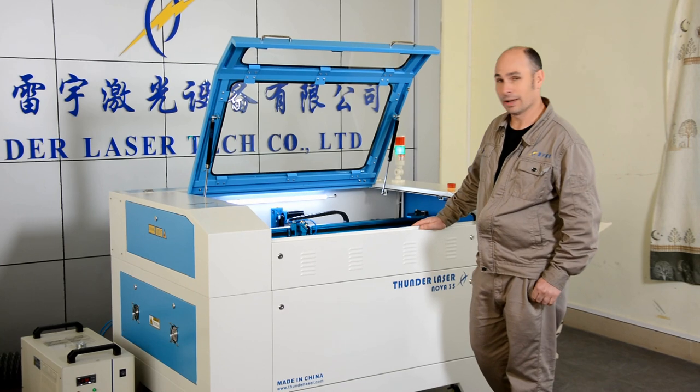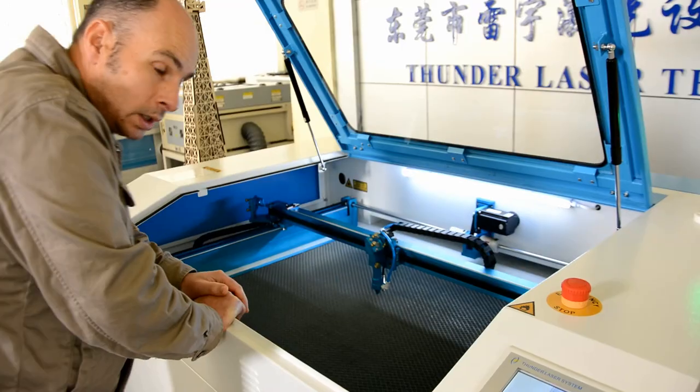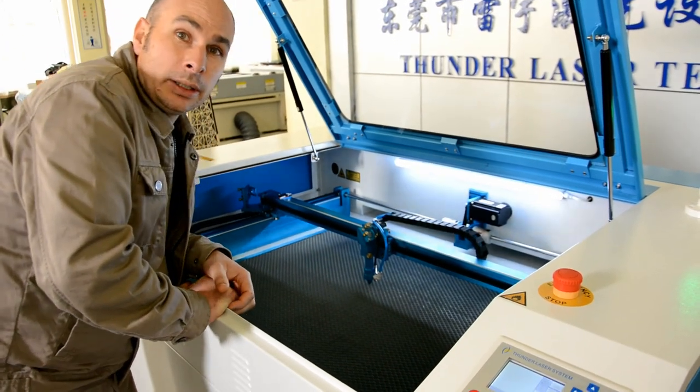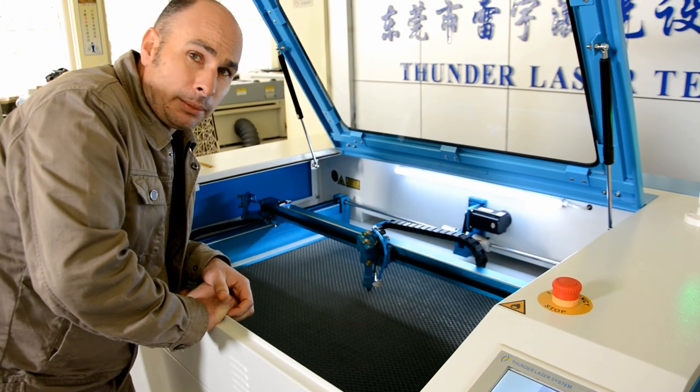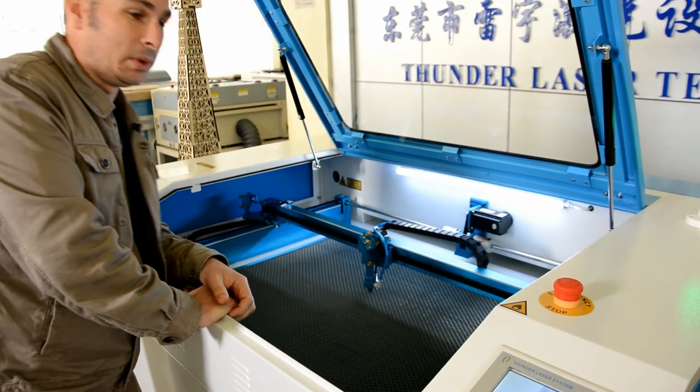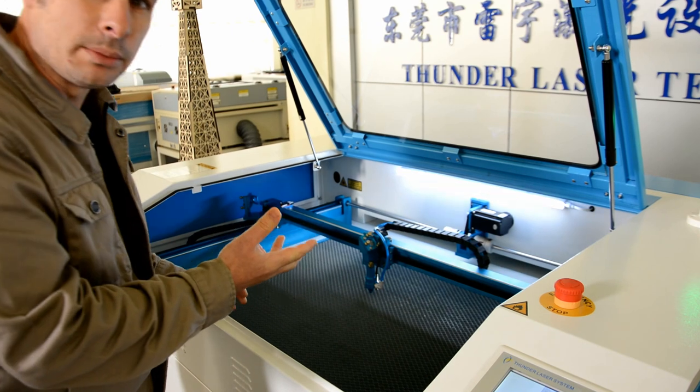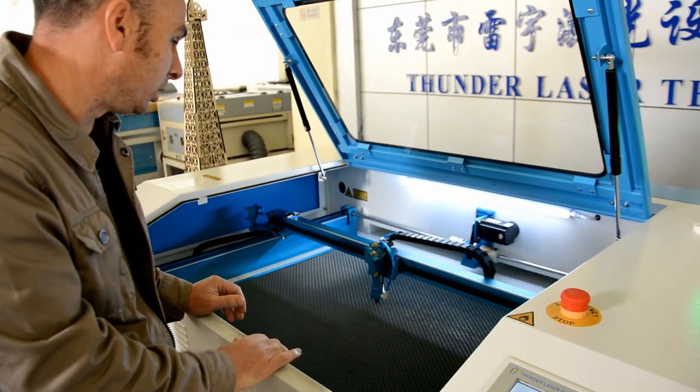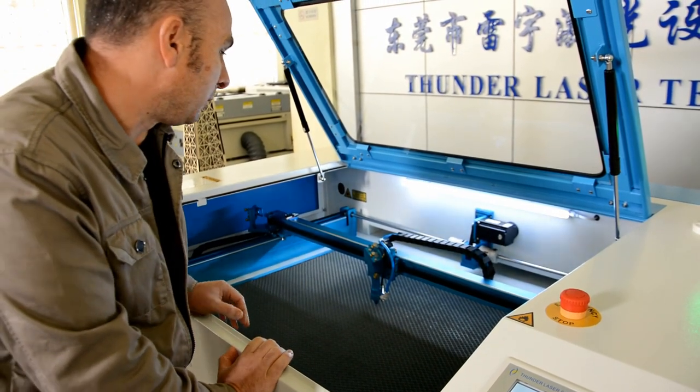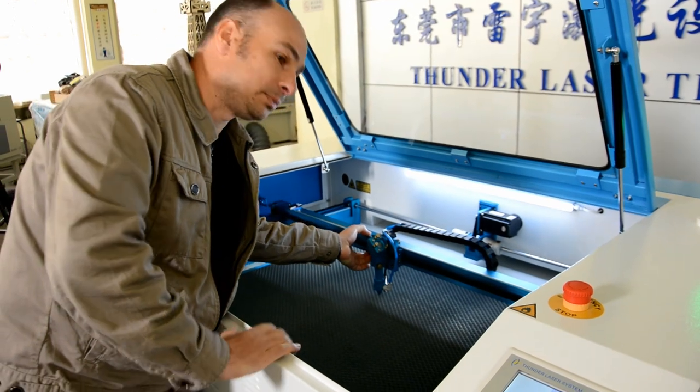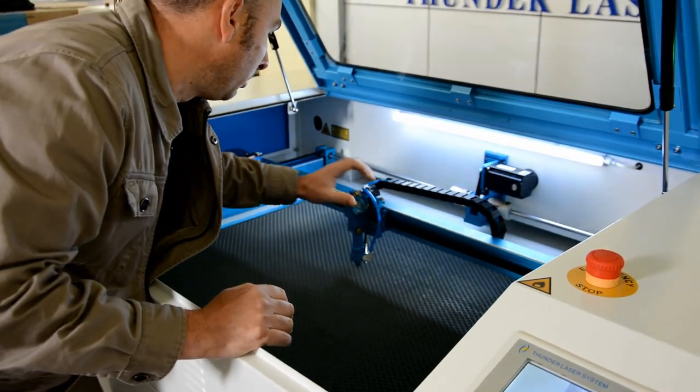Some of the things I look at when I'm evaluating machinery from China. Like any machine, it's only as good as the sum of all its parts. With the Thunder Laser, I'll point out some of the items I look at when evaluating machinery. In this particular case, I'm looking very closely at the rail and roller system. They're using rails and rollers.